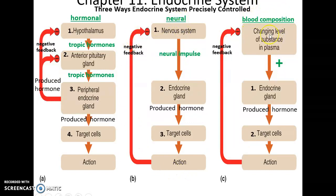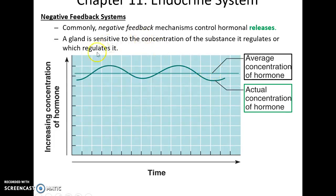Blood composition control: the organ or structure checks the composition of the plasma. If it changes appropriately, this causes the endocrine gland to produce the hormone, which acts on target cells. When the blood's composition returns to ideal, this acts as negative feedback to turn the system off. Negative feedback always maintains a certain level of hormone concentration to keep our various body functions tightly controlled and maintained around what is ideal.